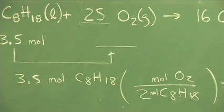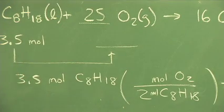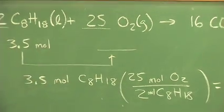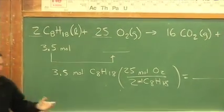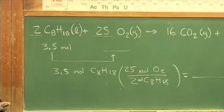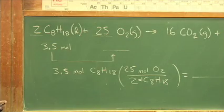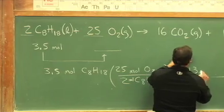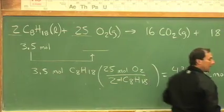The number that we get, straight from the balanced reaction, is 25. So on your calculators, 3.5 times, call it 12 and a half. And I calculate a value of 43.750 from my calculator.